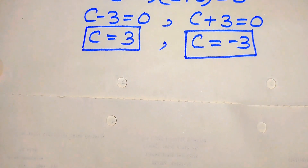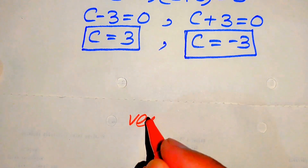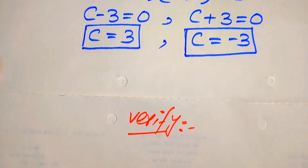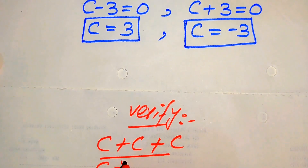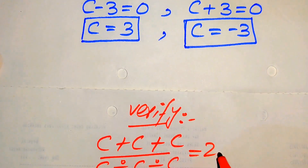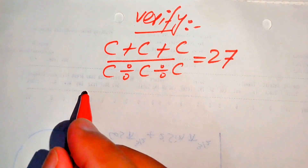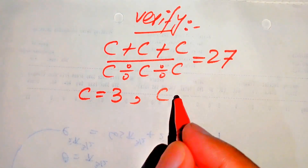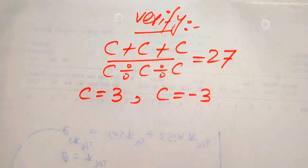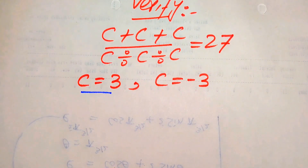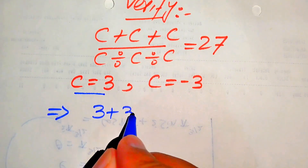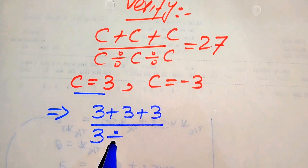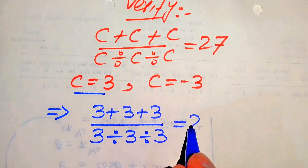Now in the next step we need to verify these two values of C. For verification, we copy down the given equation: C plus C plus C divided by C divided by C divided by C equals 27, with C equals 3 and C equals minus 3. First, we verify C equals 3 by substituting this value into the left hand side of the equation.